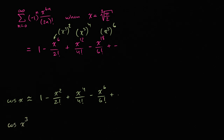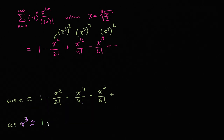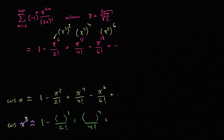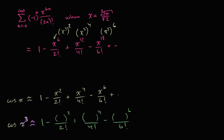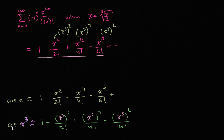So this is the cosine of x to the third. Cosine of x to the third equals one minus, x to the third squared over two factorial, plus x to the third to the fourth power over four factorial, minus x to the third to the sixth power over six factorial — which is exactly what we have. So this right over here is the power series for cosine of x to the third.